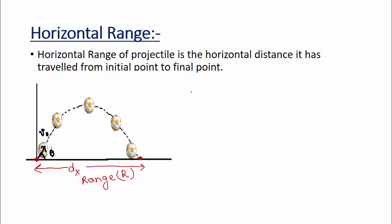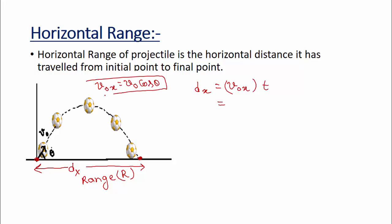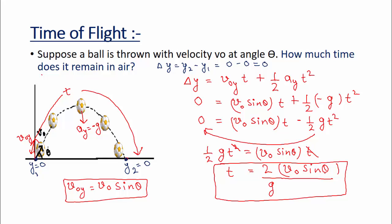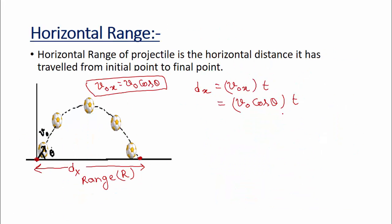The formula for horizontal distance is dx equals v₀x times t, where v₀x equals v₀·cosθ. The time from initial to final point is the time of flight: 2v₀·sinθ divided by g. Plugging this in gives: dx equals v₀·cosθ times 2v₀·sinθ over g.